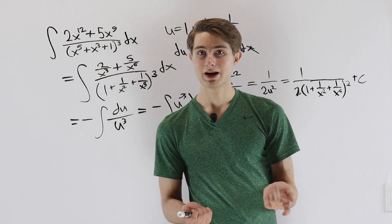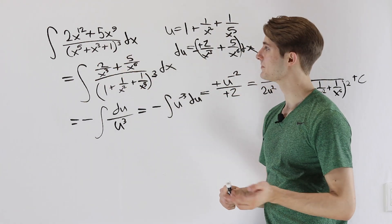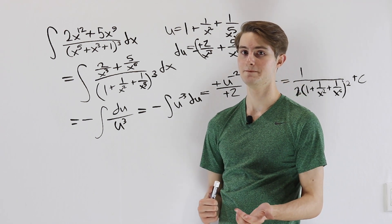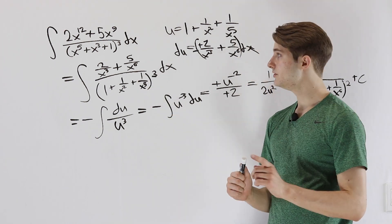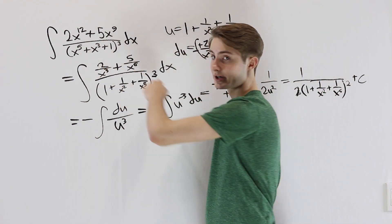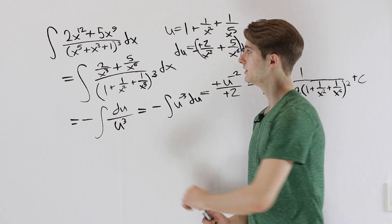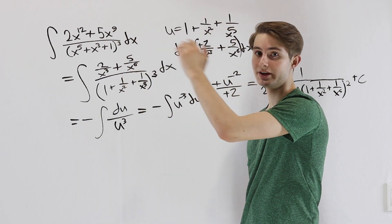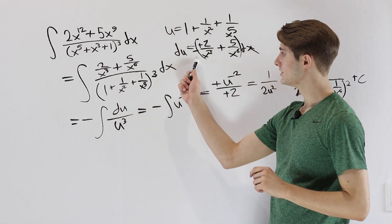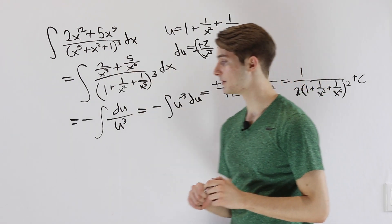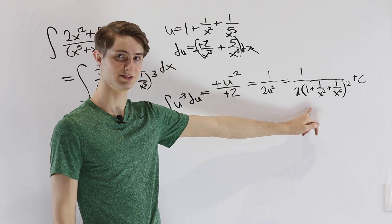The way we got here was by noticing that partial fractions is not practical for this integral. U-substitution didn't work at first, but because we knew that making any one term a constant would eliminate it under differentiation, we experimented with dividing the numerator and denominator by the same power of x. On our second try — dividing by x¹⁵ — we made it work so that du matched the numerator exactly, and we got our answer.